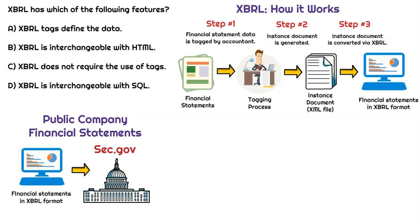Once every bit of the financial statements has been tagged, the instance document is generated. An instance document is an XML file — it's basically all of the data that has been tagged in a specific taxonomy. It's not going to be very easy for humans to read; it looks like code. So step number three is where XBRL software converts this instance document to financial statements that are readable by humans.